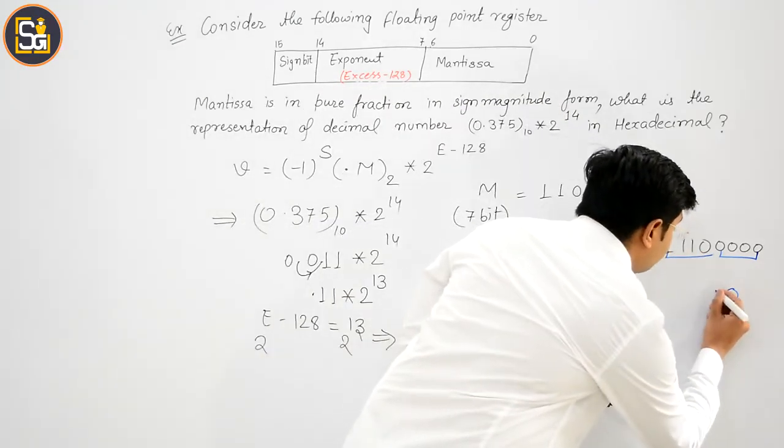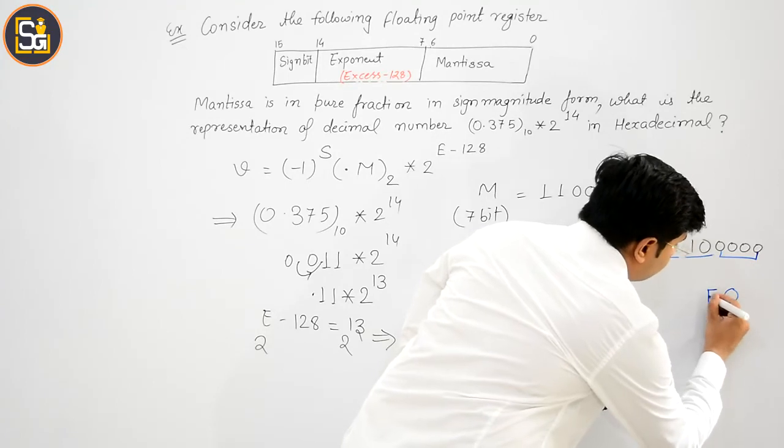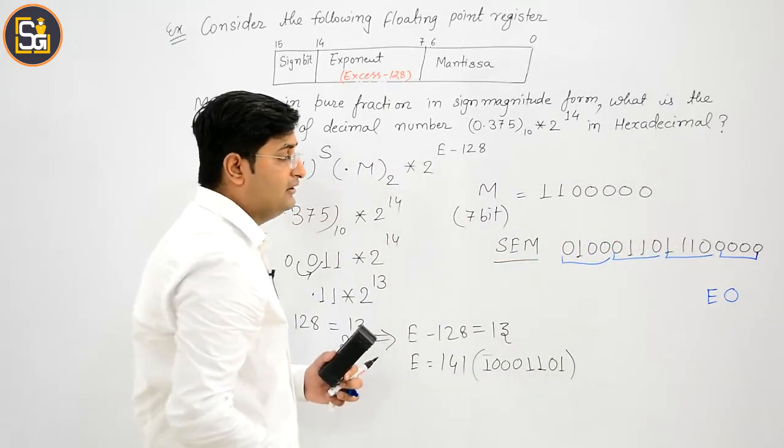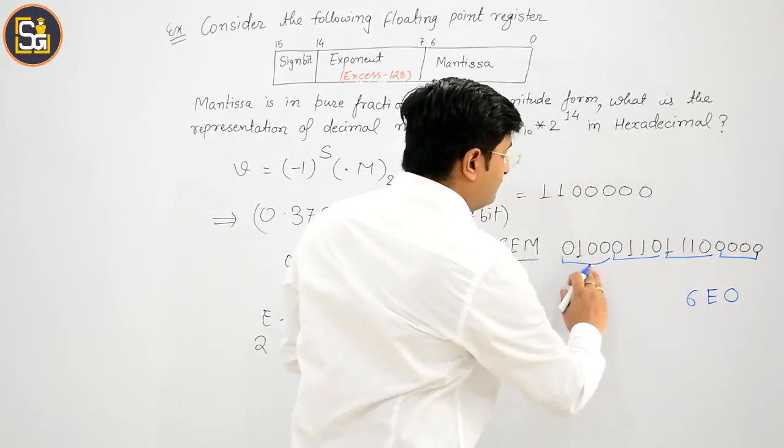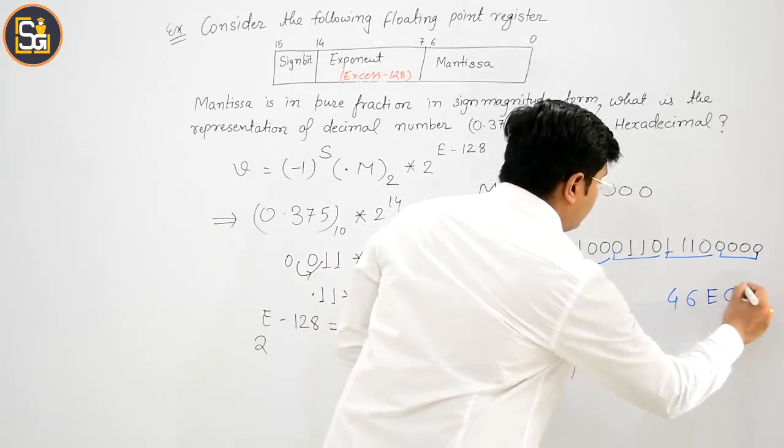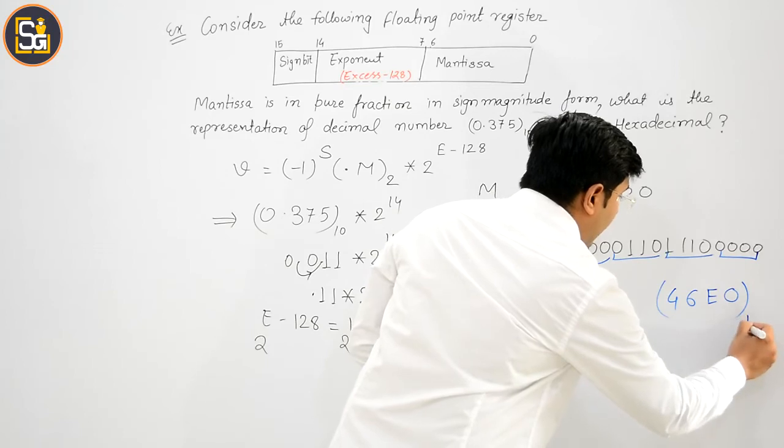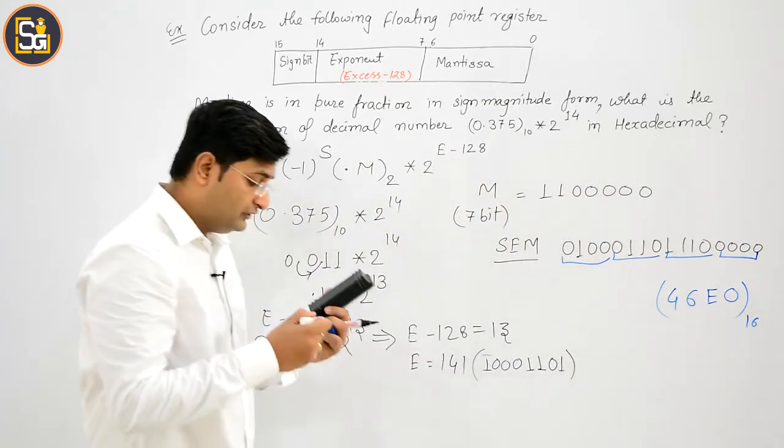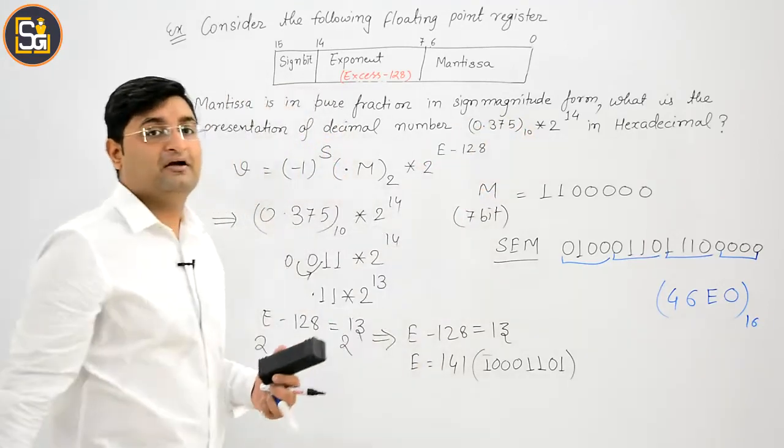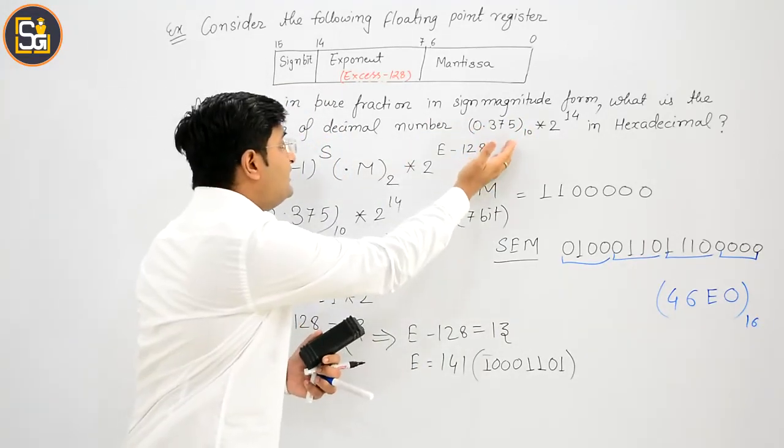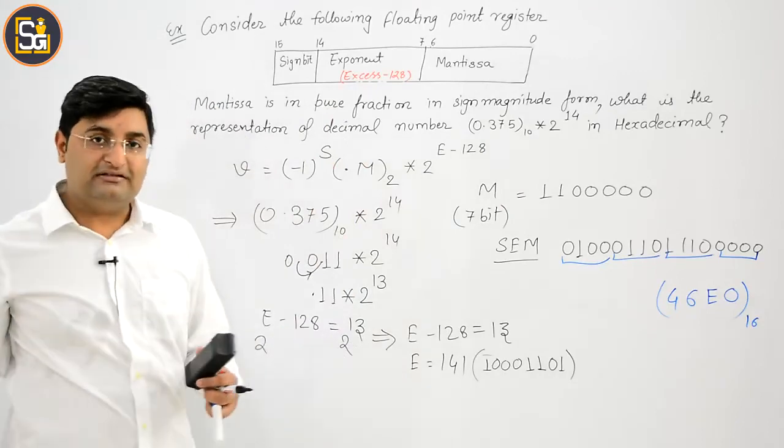14 is nothing but E. हाय ना. Next, that is 6. Now, it is 4. It is my hexadecimal notation of this number, when it is represented in this register.